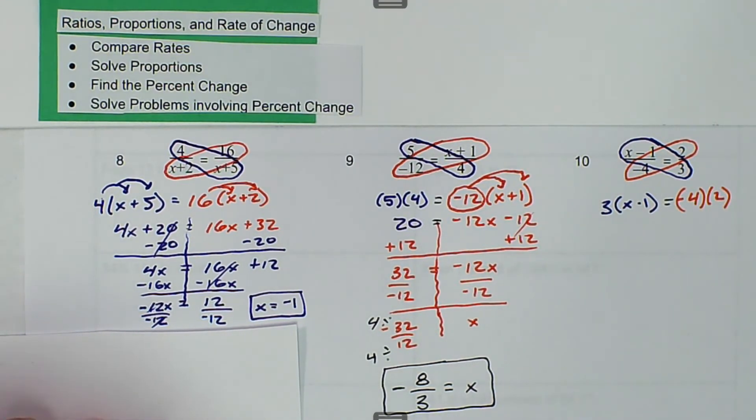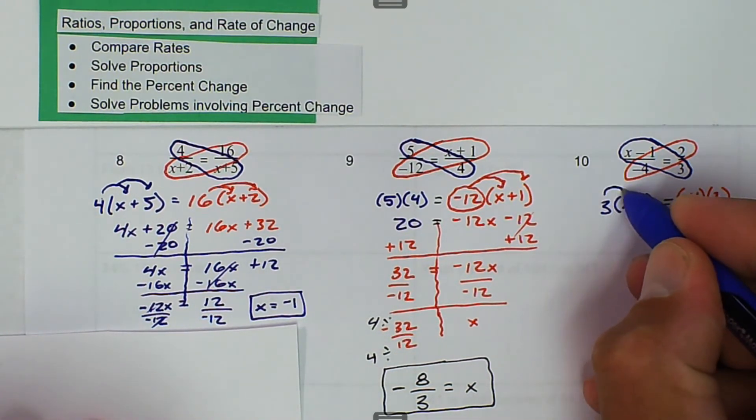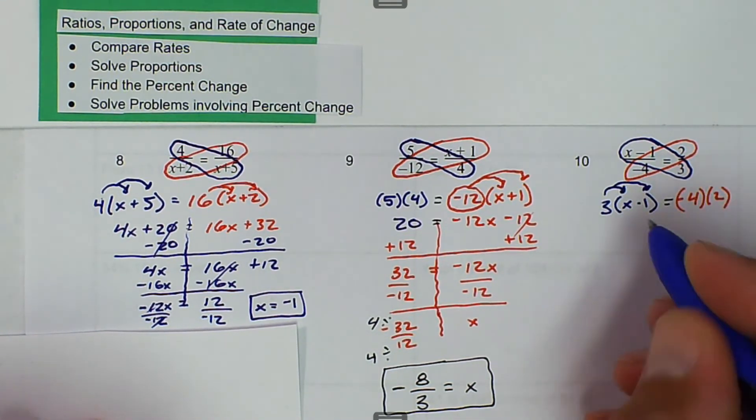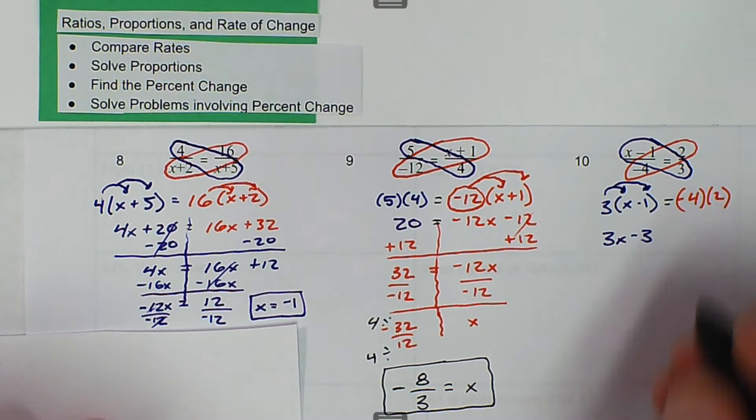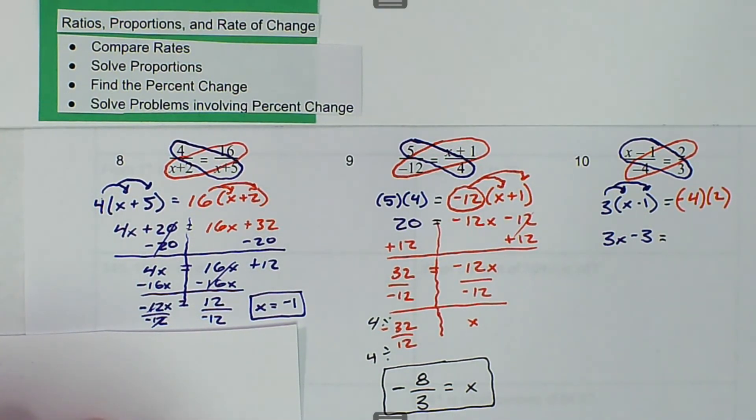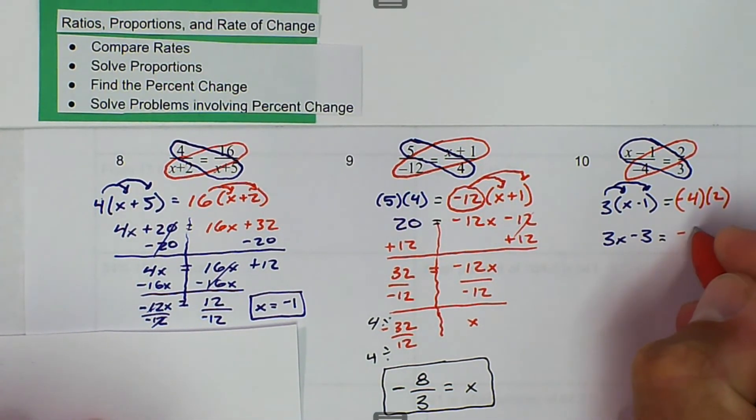And then what we get, we distribute the 3 to everything in the binomial there. We get 3x minus 3, and that is equal to negative 8. Negative 4 times 2 is negative 8.